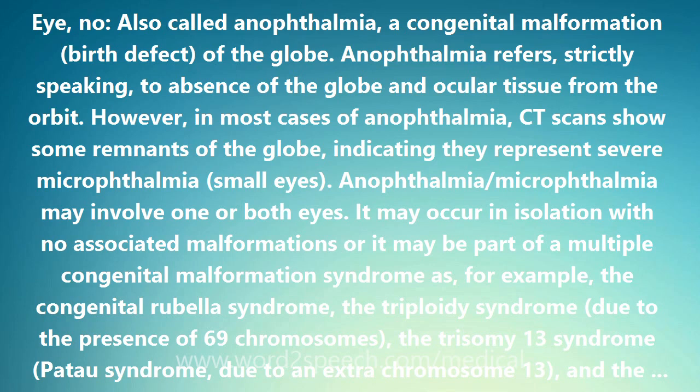Anophthalmia/microphthalmia may involve one or both eyes. It may occur in isolation with no associated malformations, or it may be part of a multiple congenital malformation syndrome — for example, the congenital rubella syndrome, the triploidy syndrome due to the presence of 69 chromosomes, the trisomy 13 syndrome (PATAW syndrome) due to an extra chromosome 13, and the Wolff-Hirschhorn syndrome, which is due to deletion of part of the short arm of chromosome 4.